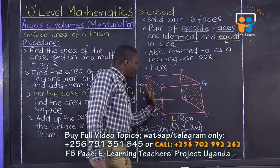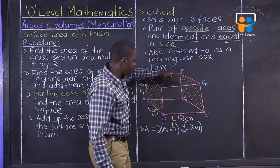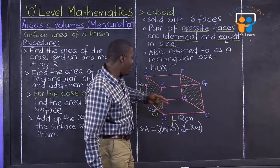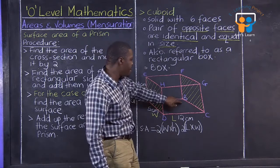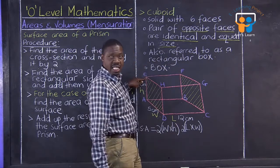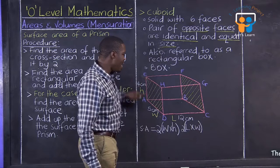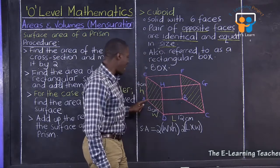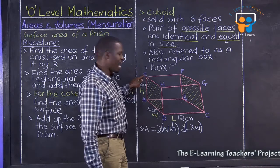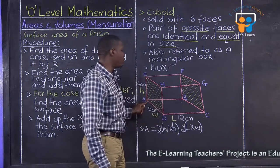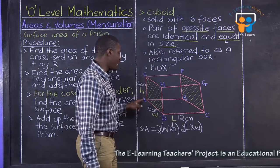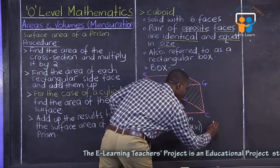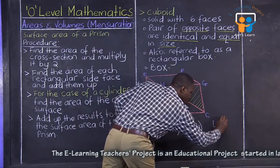Aha. Now, we are done with this and the other. The top and the bottom. Now, we are left with ABFE. The area of ABFE. This is length and that is height. So, we are having length times height. So, that means that we shall have length times height.